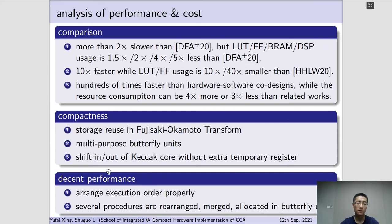The decent performance of this architecture is achieved from mainly two aspects. The first is we arrange execution order properly, such that sampling procedures are almost hidden behind NTT-related calculations. And the second is several procedures are rearranged, merged, and allocated in the unified butterfly structure, rather than conducting separately, saving total cycles.